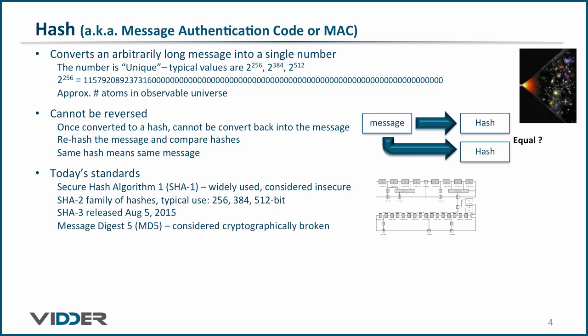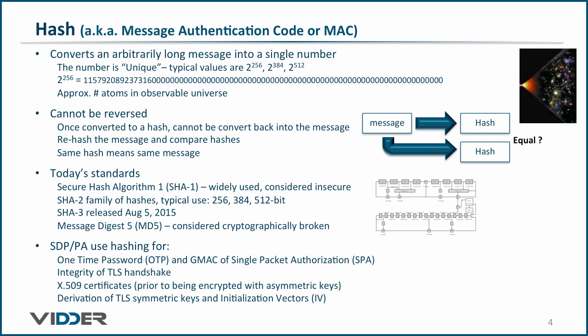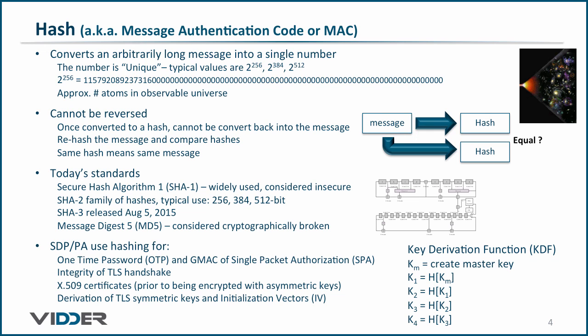This is referred to as a collision, and it breaks the primary objective of hashing. The software-defined perimeter and precision access use hashing to create the one-time password and GMAC of single packet authorization, for the integrity of the TLS handshake, for hashing X.509 certificates, and for the derivation of TLS symmetric keys and initialization vectors. In that last use case, one master key is used to create two or more derived keys by iteratively hashing the master key. This is common in TLS, where the handshake creates the master key via asymmetric key encryption, then uses a hashing function such as SHA-384 to derive the two symmetric keys and two initialization vectors required for Galois Counter Mode AES encryption.